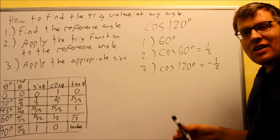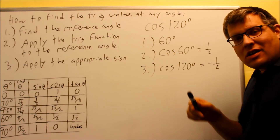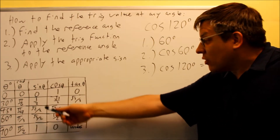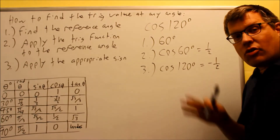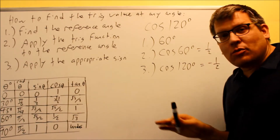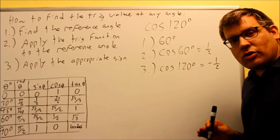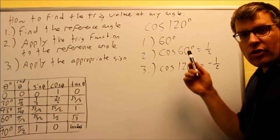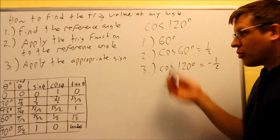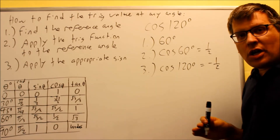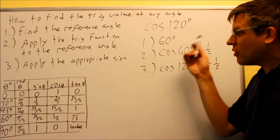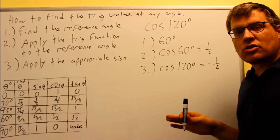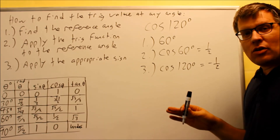Now we have a way to find the exact value for any angle between 0 and 360. The reference angles must translate back into 30, 45, or 60 to get exact values off the table. You could have cosine of 10 degrees or 17 degrees and still go through this process, but you'd only get an approximation. If you want an exact value, they have to give you a reference angle that refers back to one of the ones in the table. But you're not limited to finding reference angles only for special angles — you can find reference angles for any angle.